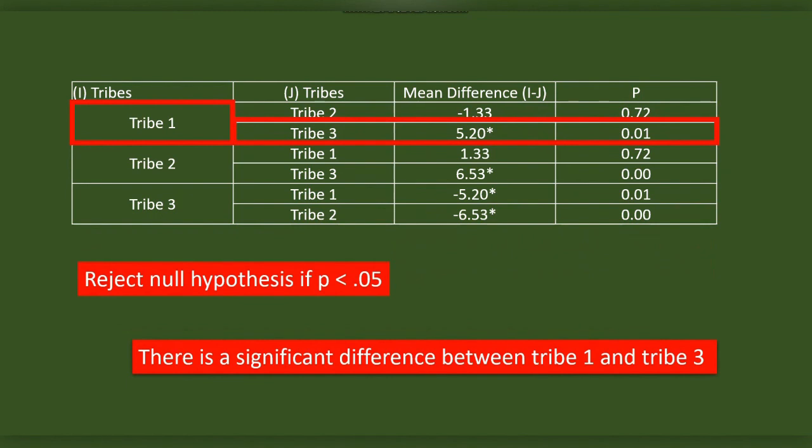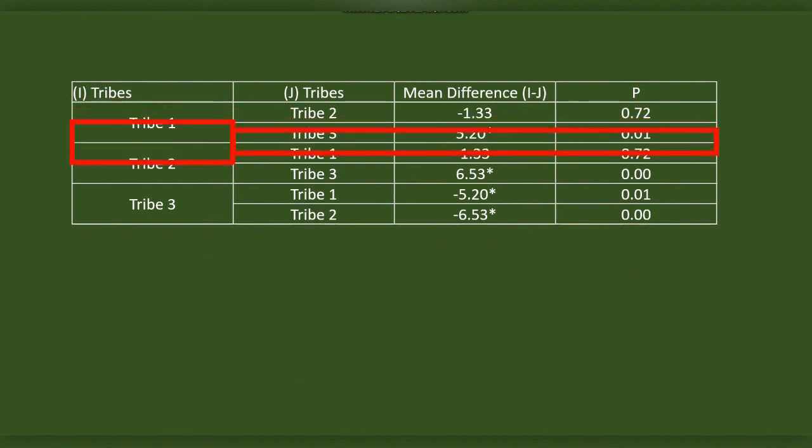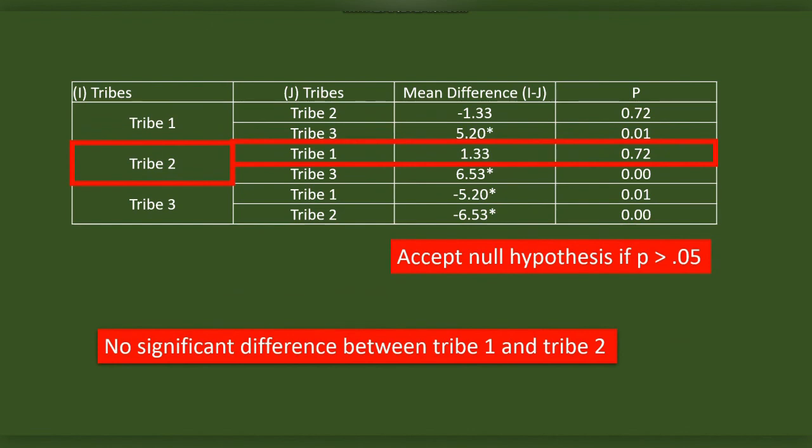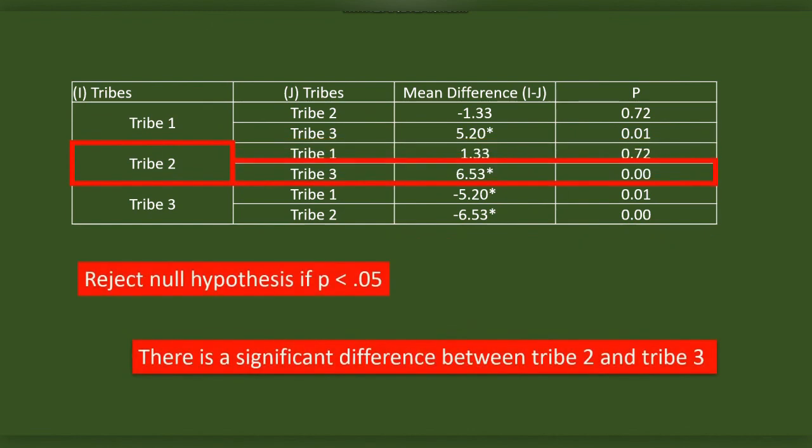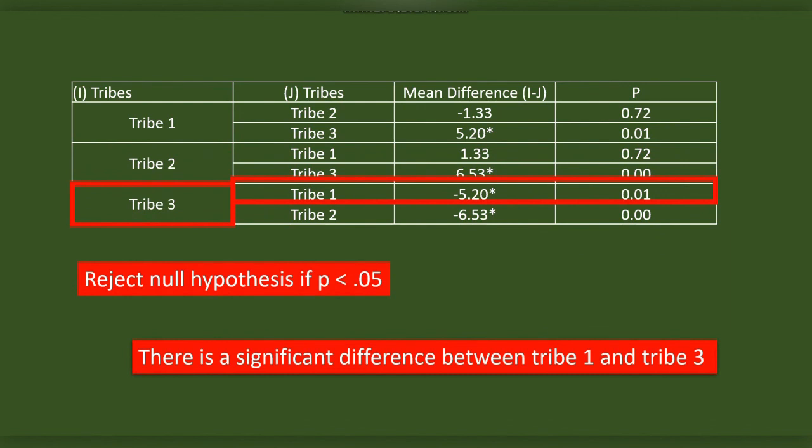Now while comparing tribe 1 and tribe 3, the mean difference is 5.2. P or probability is less than 0.05. We have to reject the null hypothesis here because there is a significant difference between tribe 1 and tribe 3. We have to reject the null hypothesis here because there is a significant difference between tribe 2 and tribe 3.